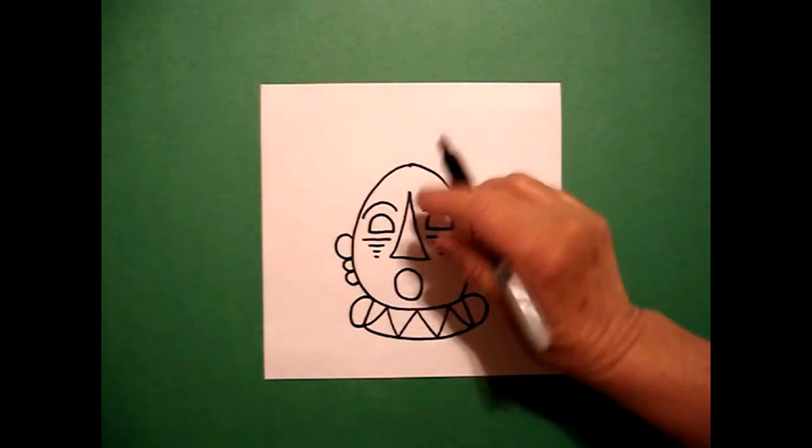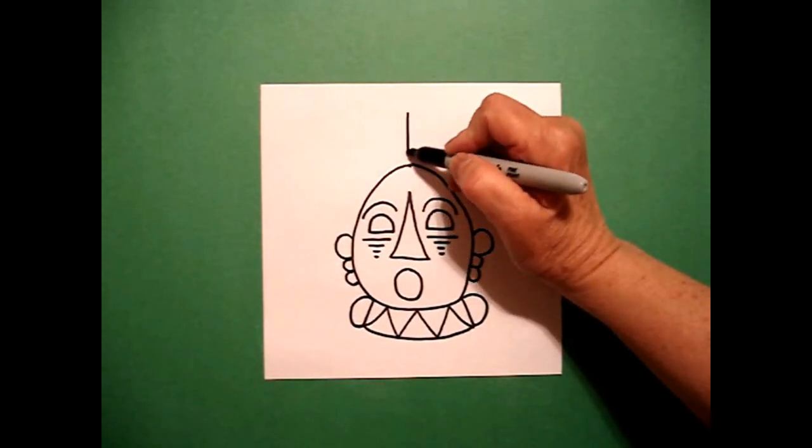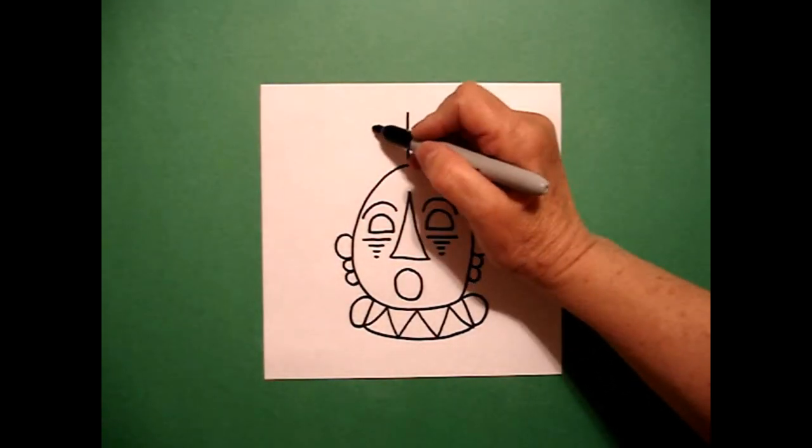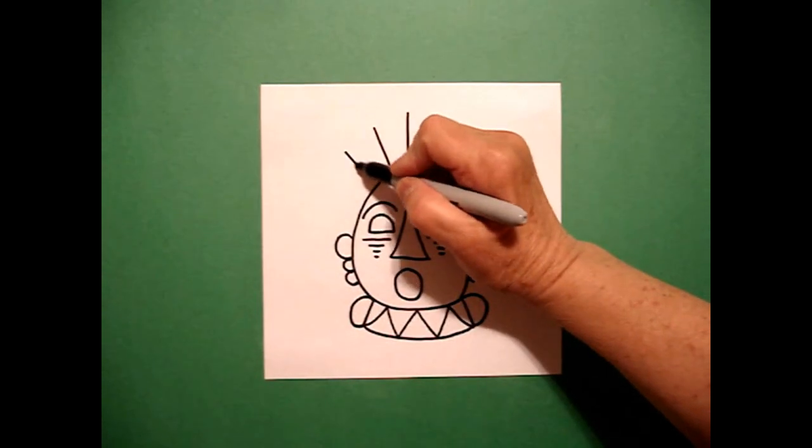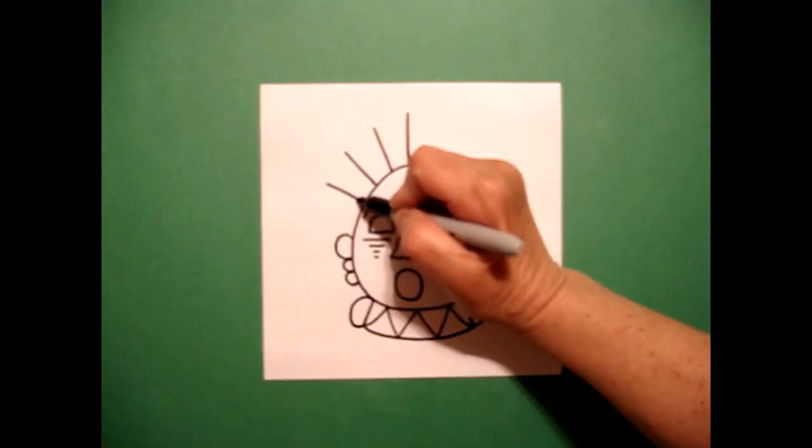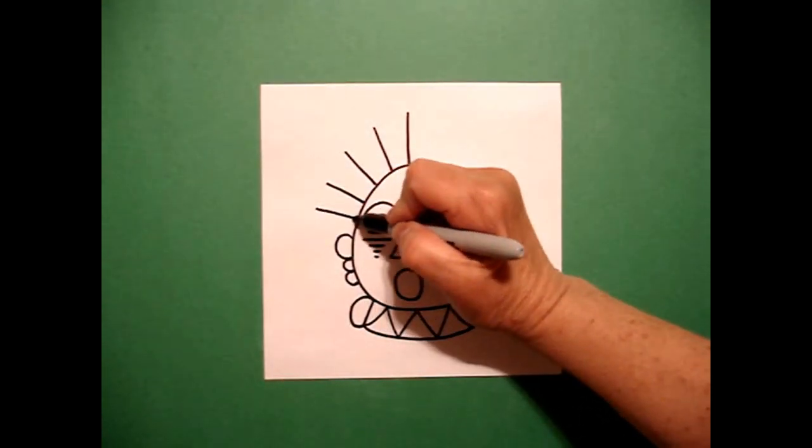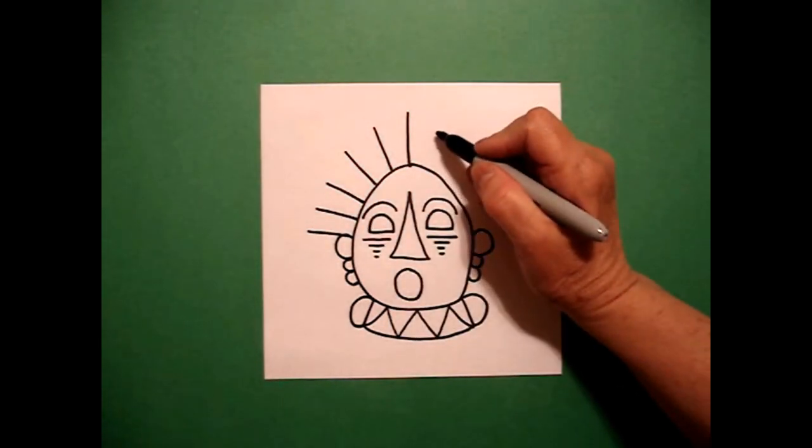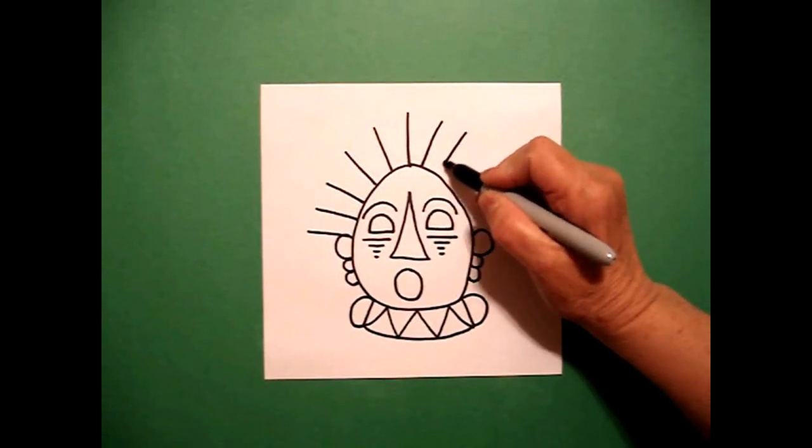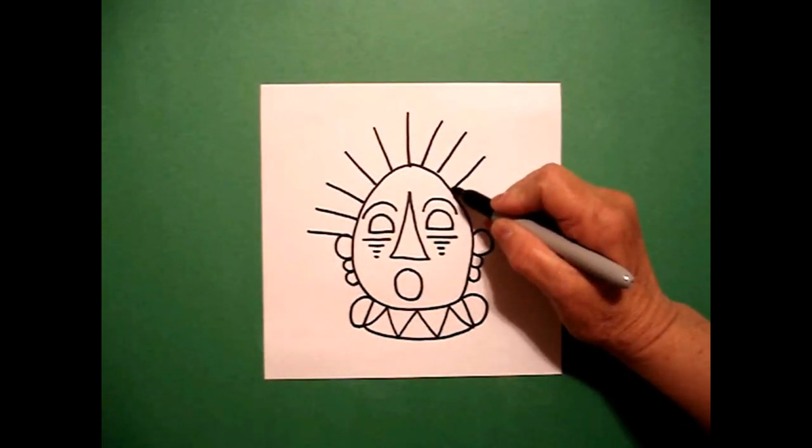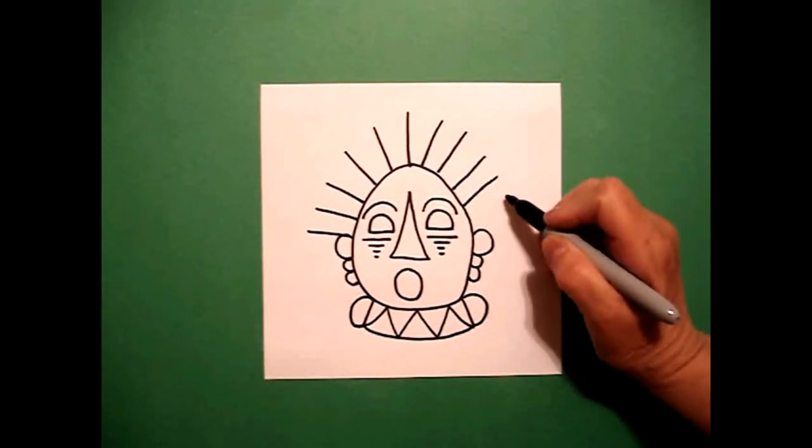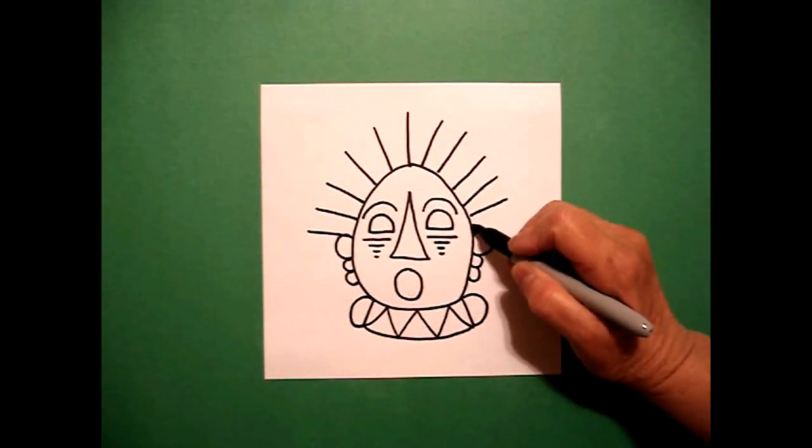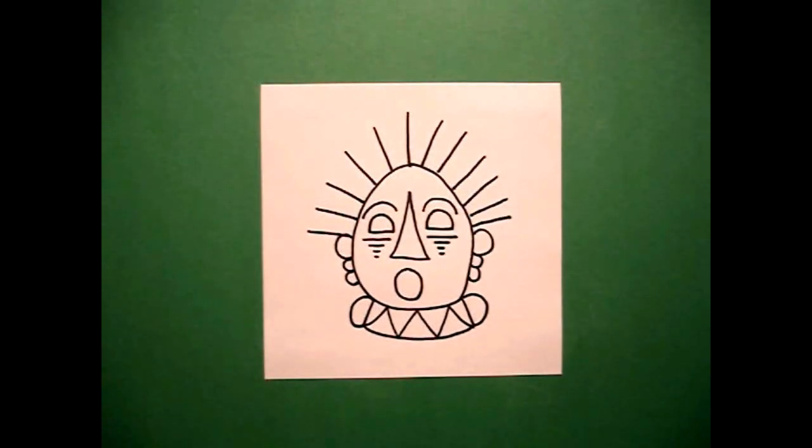I come back up to my first dot and I'm just going to draw a straight line, one, two, three, four, five, six on the left. Come back up, one, two, three, four, five, six on the right.